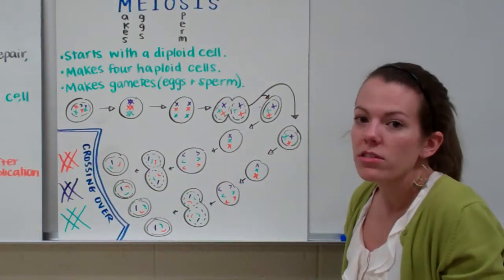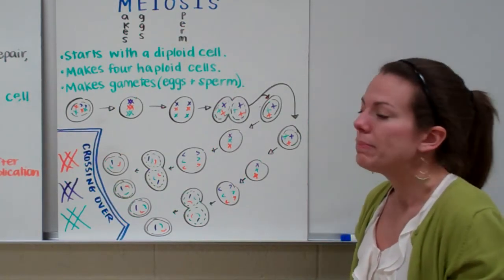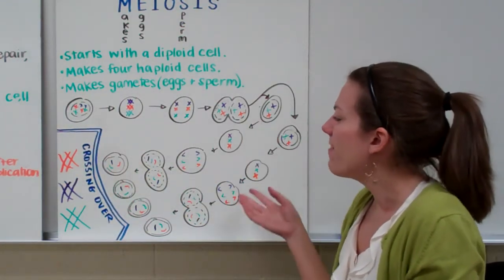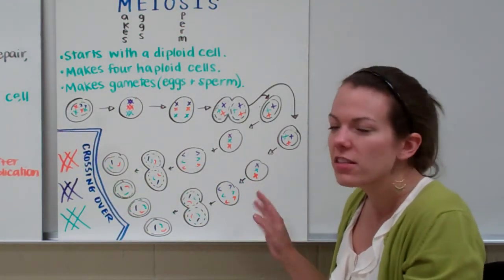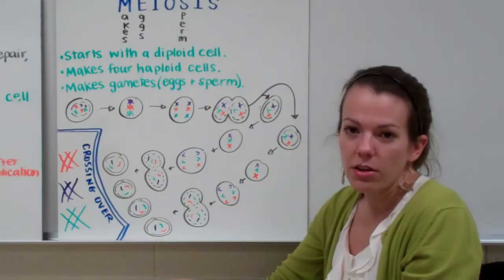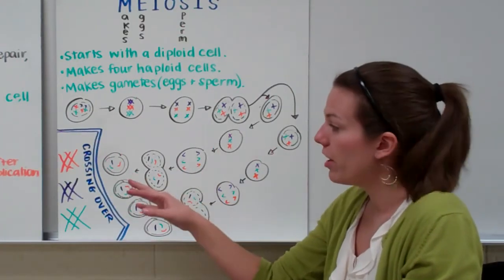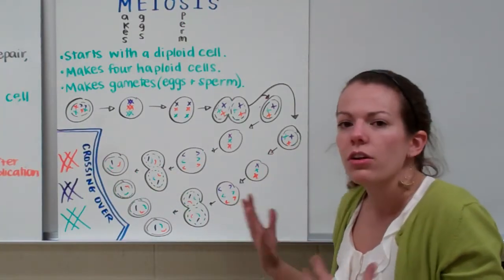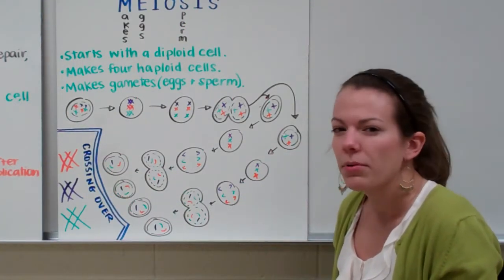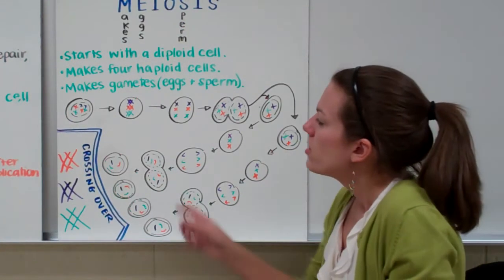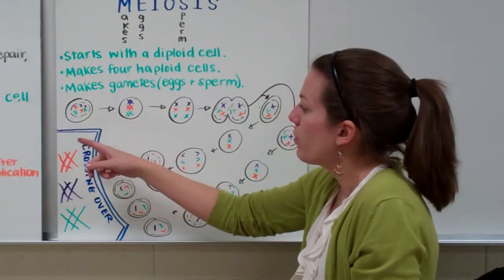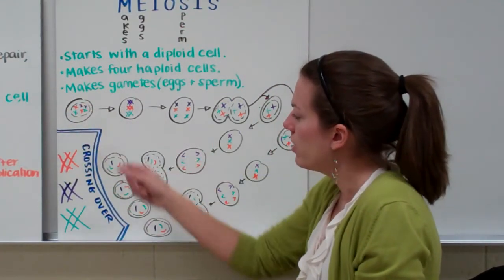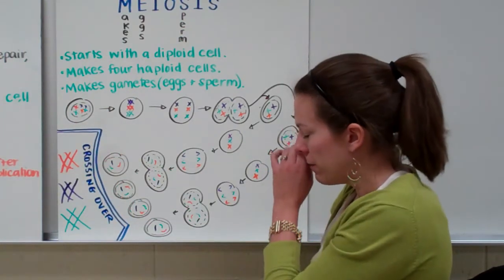Now let's see what meiosis actually looks like on a cellular level. We first start out with prophase. You can refer back to the mitosis section earlier in the video to see what the names of these phases are, but overall you just need to understand what meiosis is making. We start with prophase — our chromosomes have packed up inside the nucleus and our nucleus begins to dissolve.